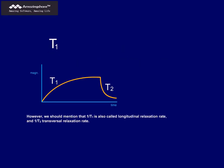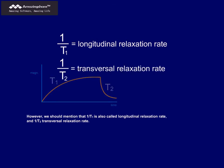However, we should mention that 1 over T1 is also called longitudinal relaxation rate, and 1 over T2, transversal relaxation rate.